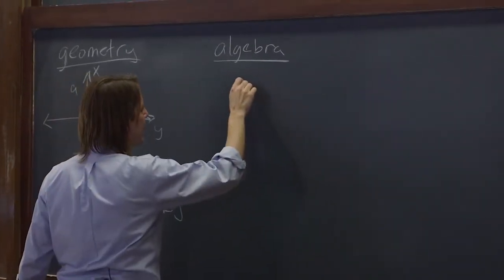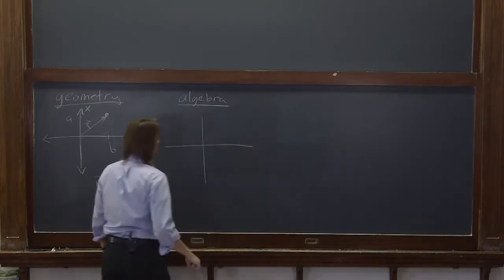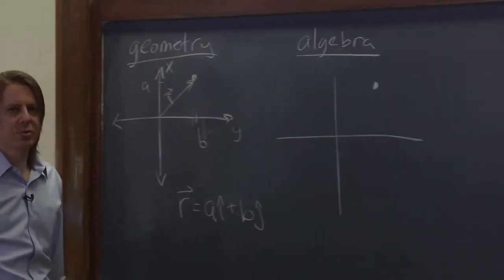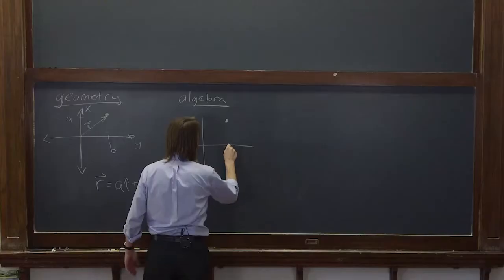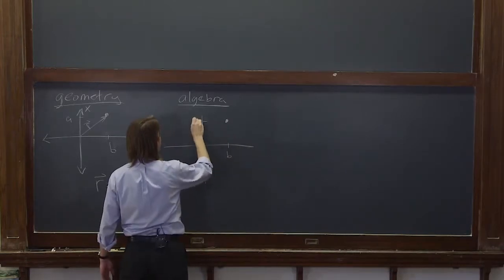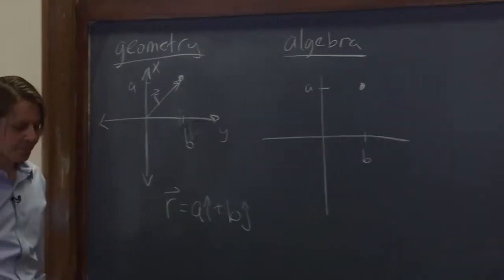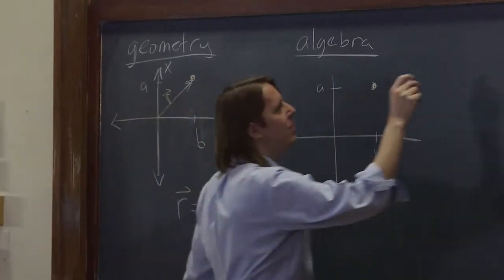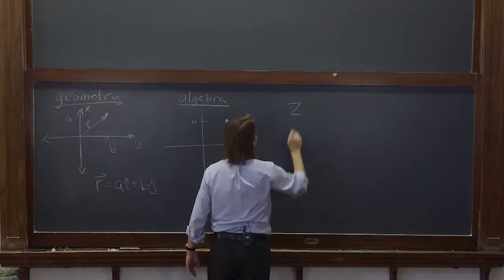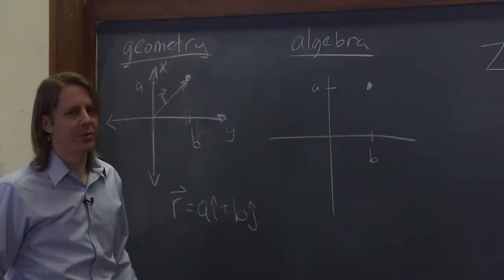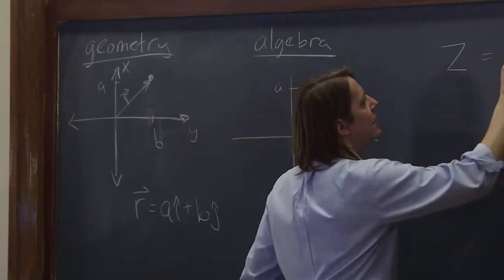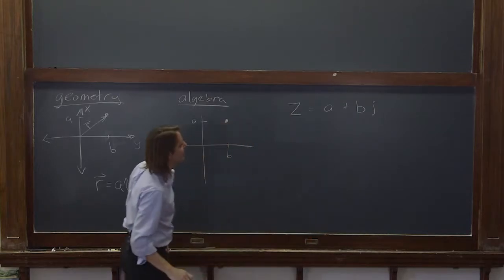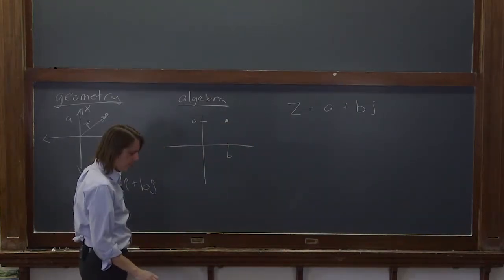So again, you'd want to have a plane. And you'd have some position out here of something going in a circle. And on this axis, it might be at b. And on this axis, it might be at a. And what we're going to do is describe it not with a vector, r. We're going to describe it simply with a number, z. We'll call it z. There's going to be no unit vectors on this. And we're going to say z equals a plus b times j.